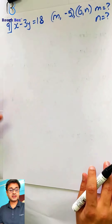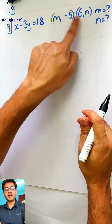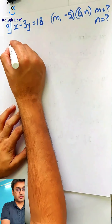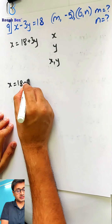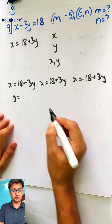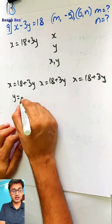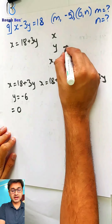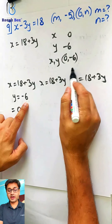I want you to try sum number 9. Sum number 7 is skipped for now — it's a very important question we'll come to at the end. For sum 9, you've got to find the values of m and n. Making x as the subject: x equals 18 plus 3y. Assuming y as minus 6: minus 6 into 3 is minus 18, so x equals 0. So the point is (0, minus 6). Please make sure you don't write minus 6 for x — x is 0, y is minus 6 — otherwise you'll get a flipped point.